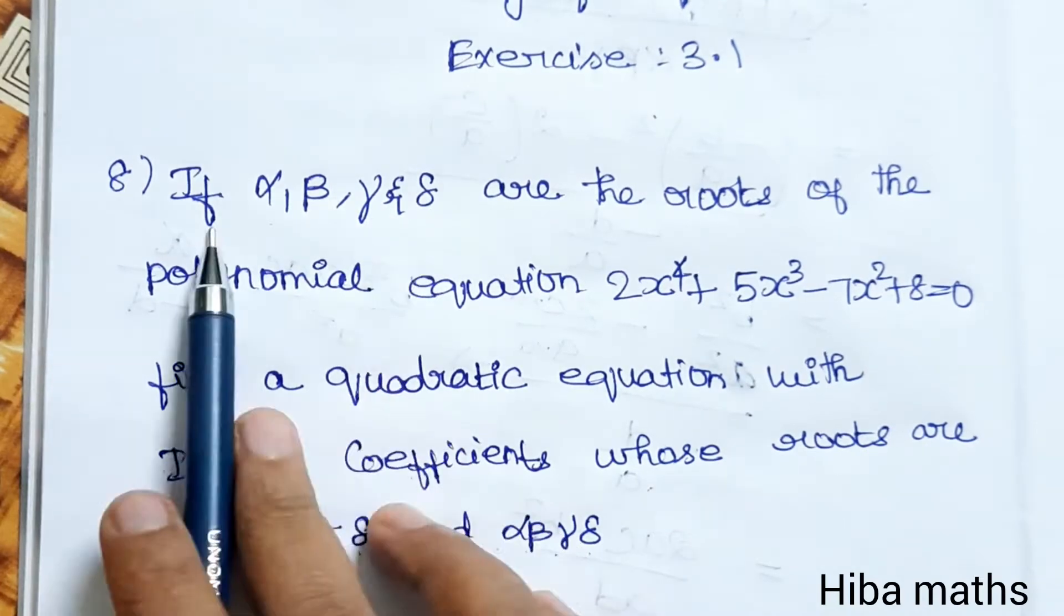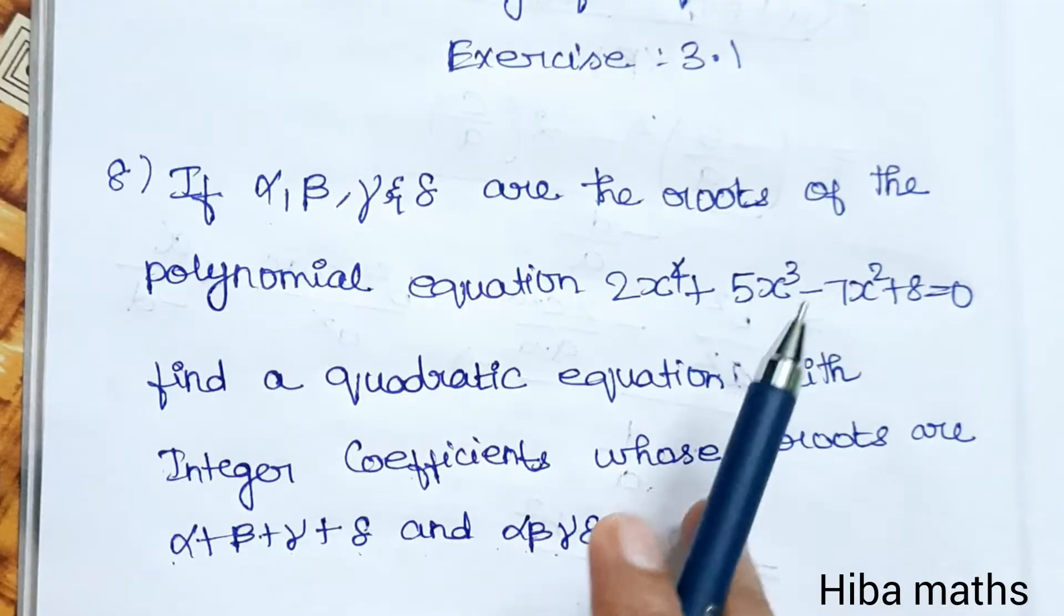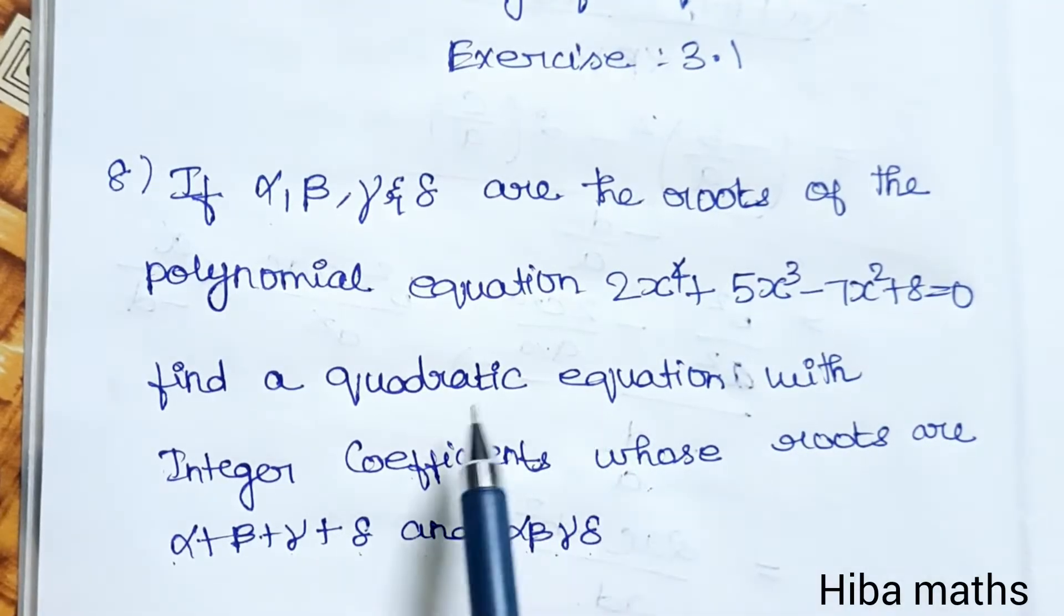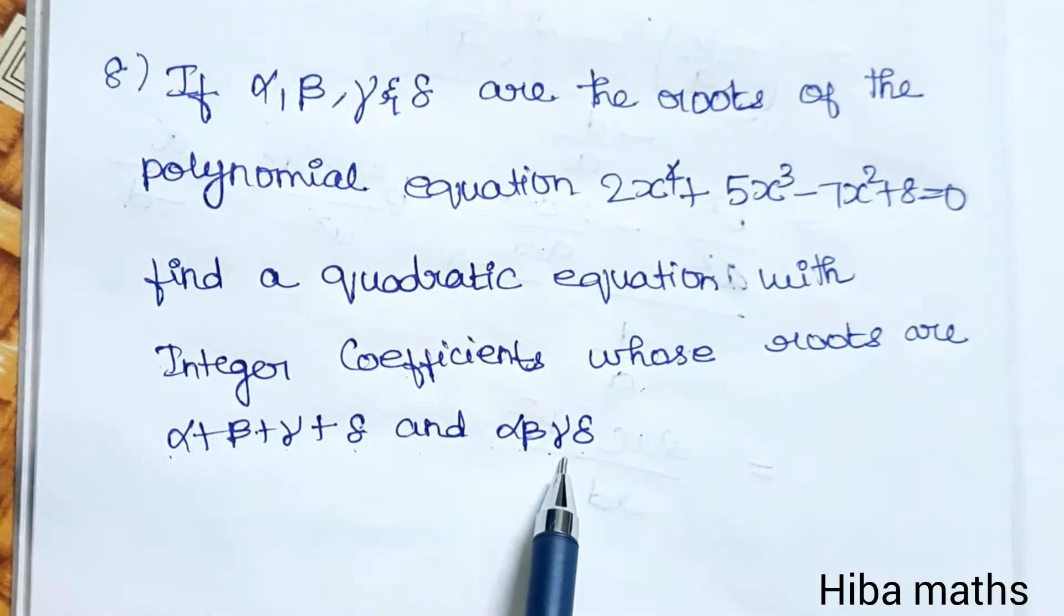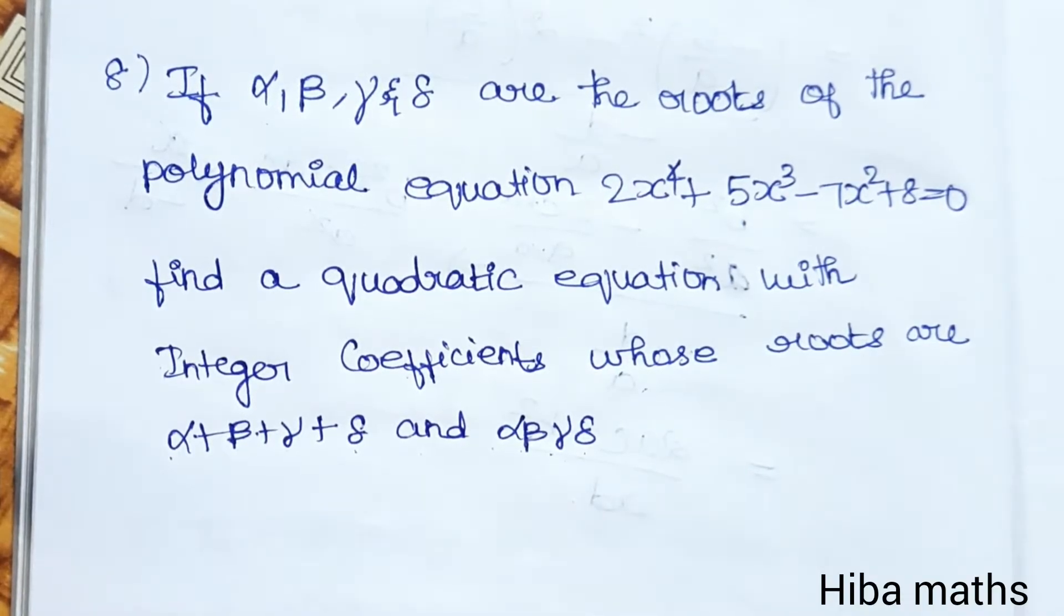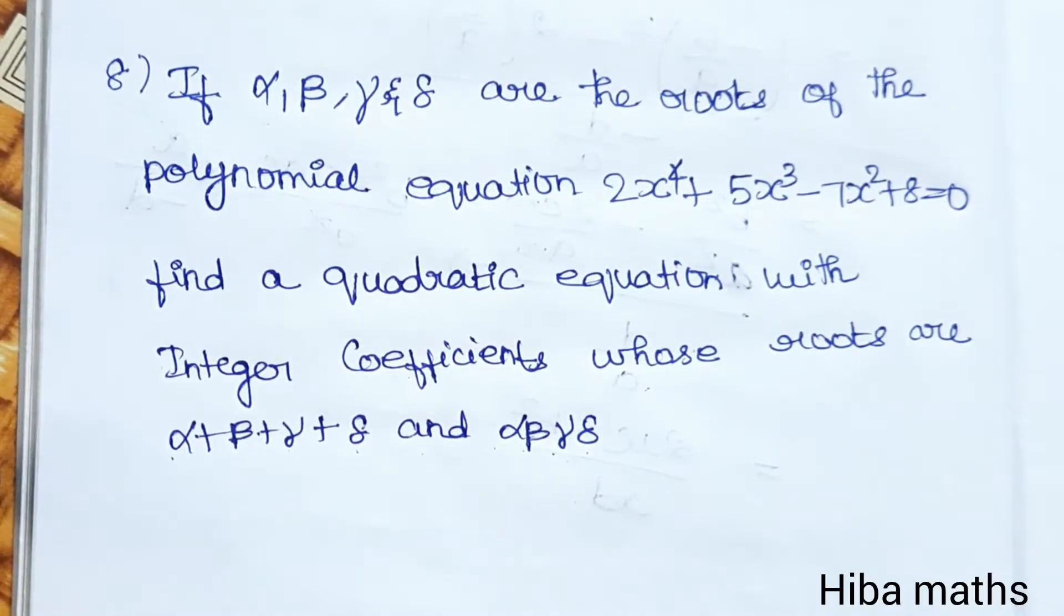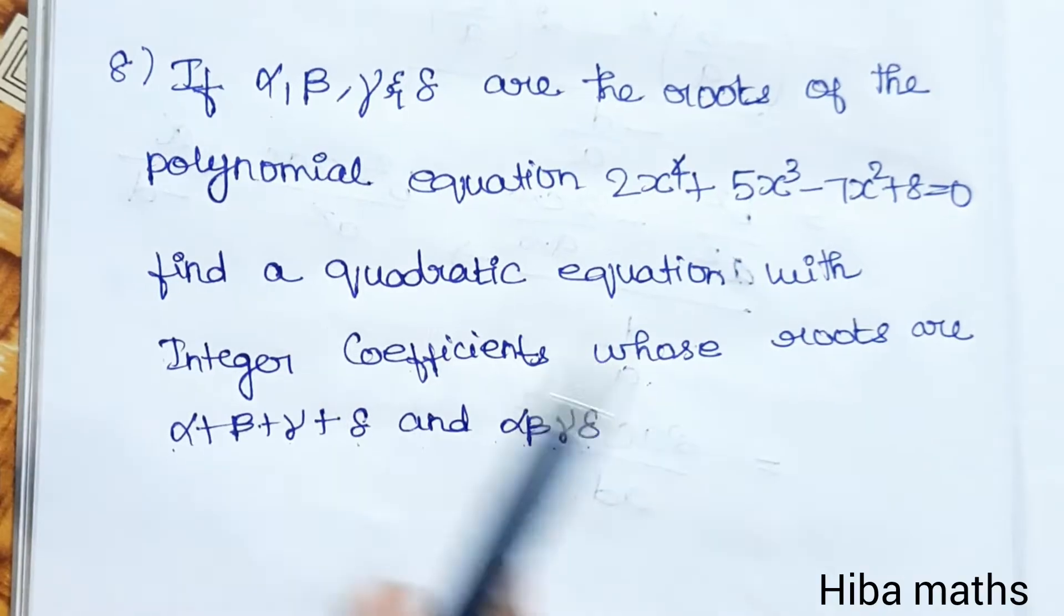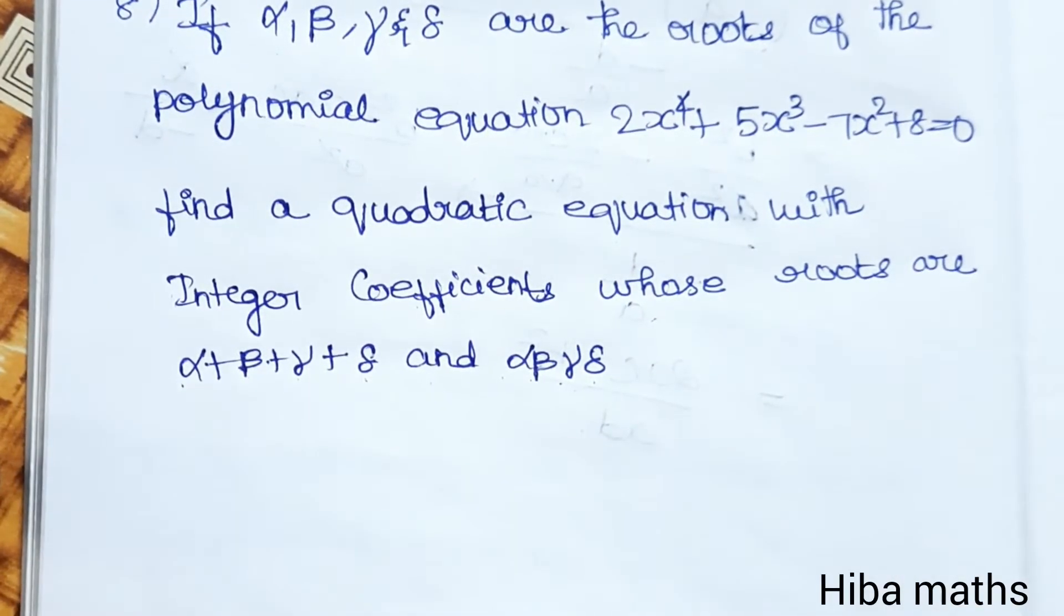We have 4 roots. Now we have to find the quadratic equation. So we have to use the general form of quadratic equations: x² minus sum of roots times x plus product of roots. It is very easy.